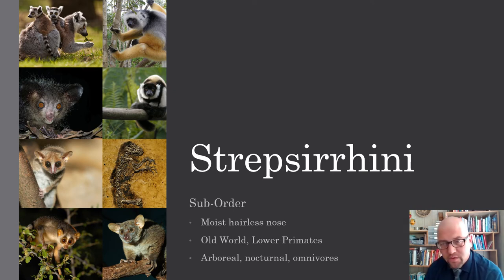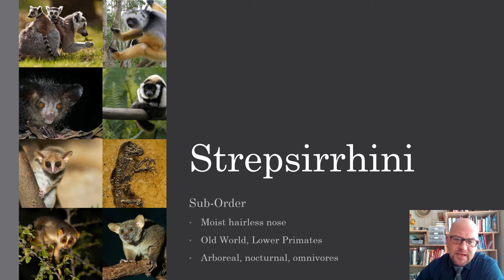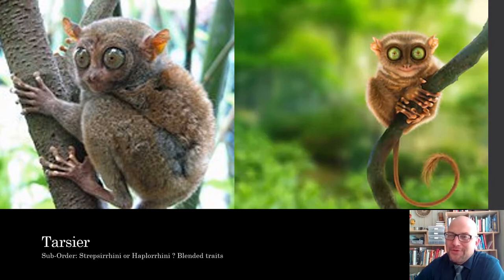Our order is primates. Our suborder is the Strepsirrhini — which have kind of moist hairless noses — and includes lower primates like old world monkeys. These tend to be nocturnal and omnivores as well. Then there are the tarsiers, which everybody loves — these really cute critters that live in trees, with super long tails and ginormous eyes. They're adorable.